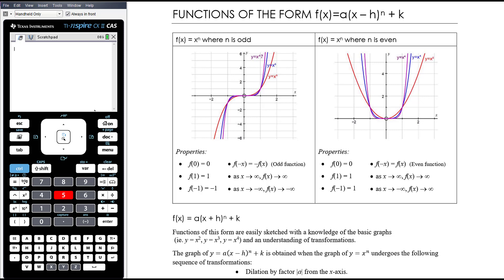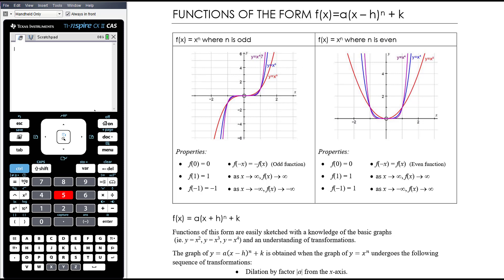Here we're looking at the basic graph shapes of x, x squared, x cubed, x to the power 4, x to the power 5, x to the power 6, etc., and then applying transformations according to the function when given in this form. When n is an odd number — so we have an odd degree polynomial — the basic functions x cubed, x to the power 5, x to the power 7, x to the power 9, and so on, will all essentially take this same shape; they just get more and more extreme.